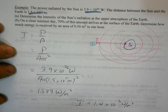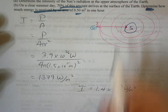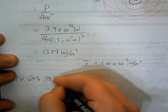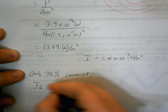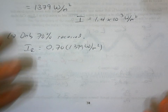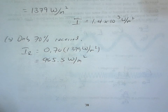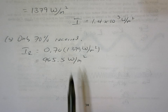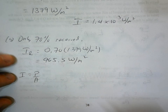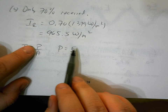On a clear summer day, 70% of this amount arrives at the surface of the earth. We'd like to find how much energy is received over an area of 0.50 m² in one hour. First, the received intensity is 0.70 × 1,379 ≈ 965.5 watts per meter squared. We know intensity = power/area and power = energy/time, so combining: intensity = energy / (area × time).